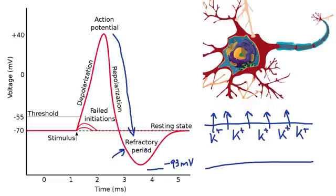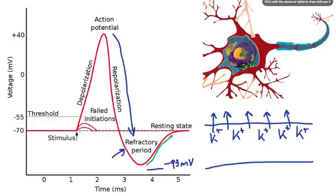All along this process, we have sodium-potassium pumps that are pumping sodium out of the cell — three sodium ions out and two potassium ions back in. And that's going to cause the membrane potential to eventually reach back to its resting state.